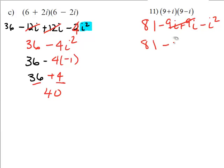Minus i squared. And remember, i squared is the same as negative 1, so that would be 81 plus 1, or 82, because this is already 1 times negative 1, and that makes a positive 1.